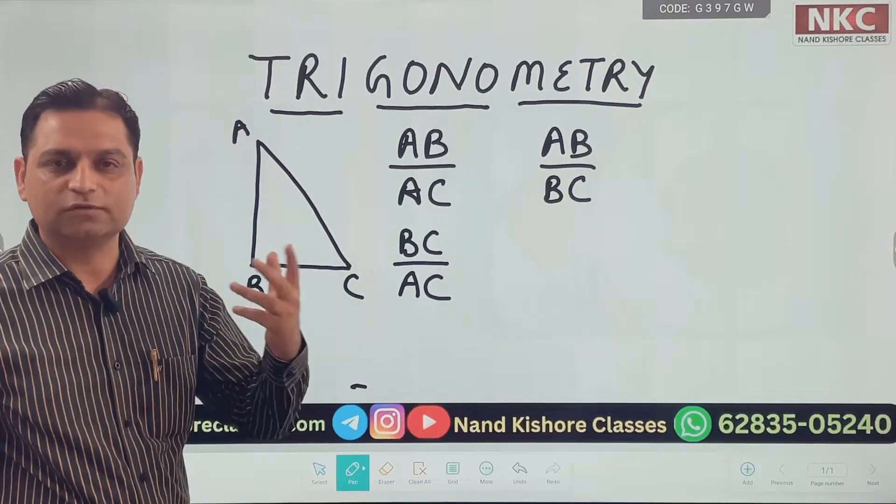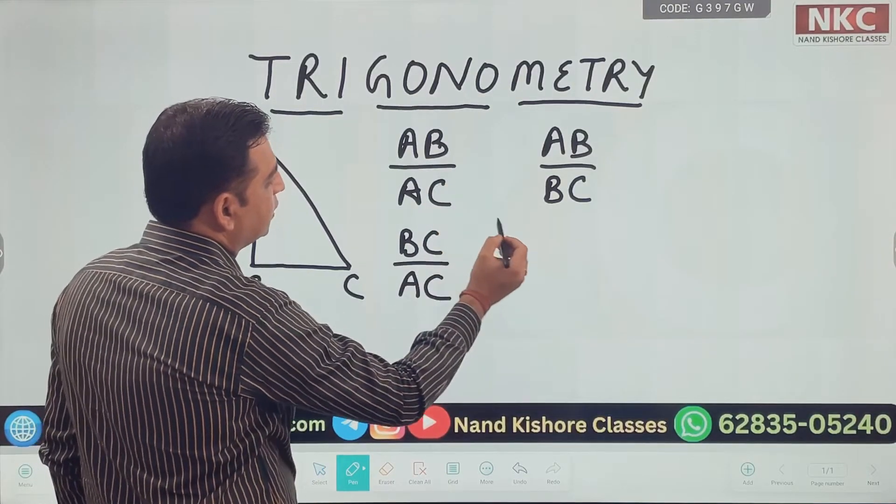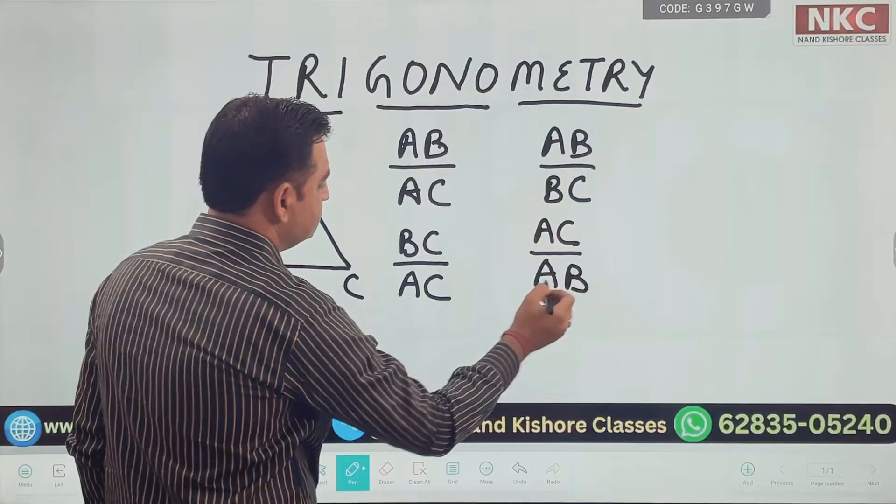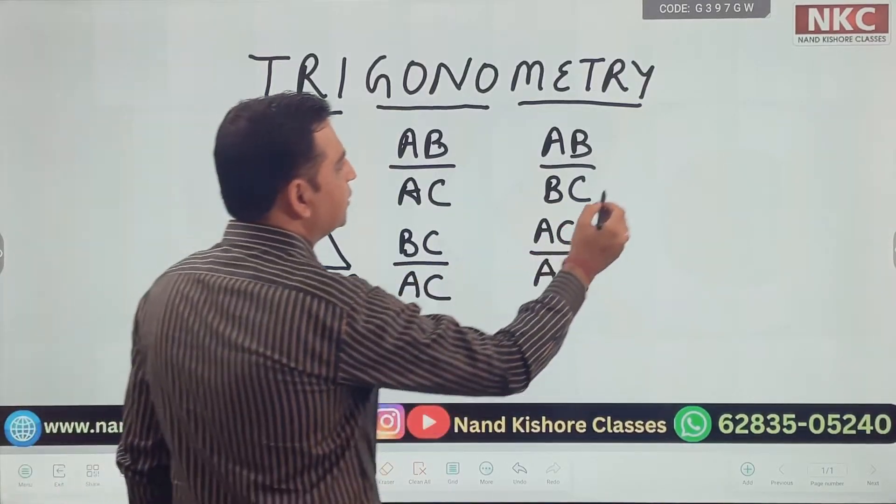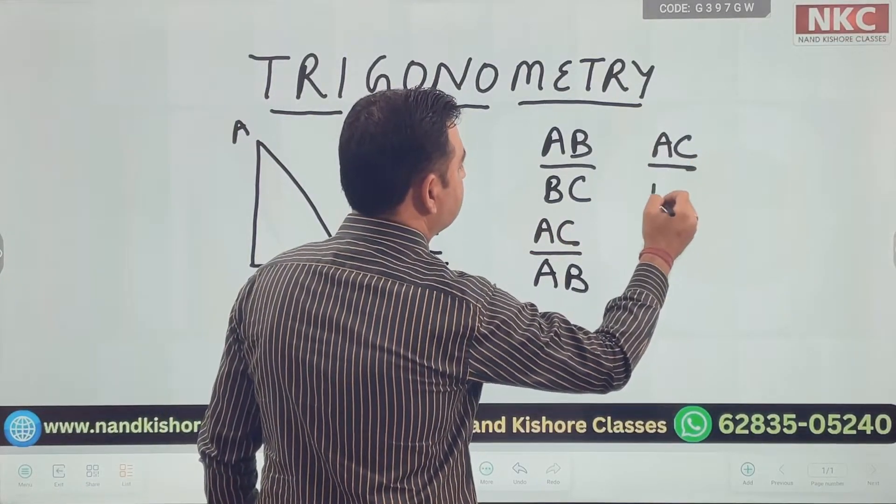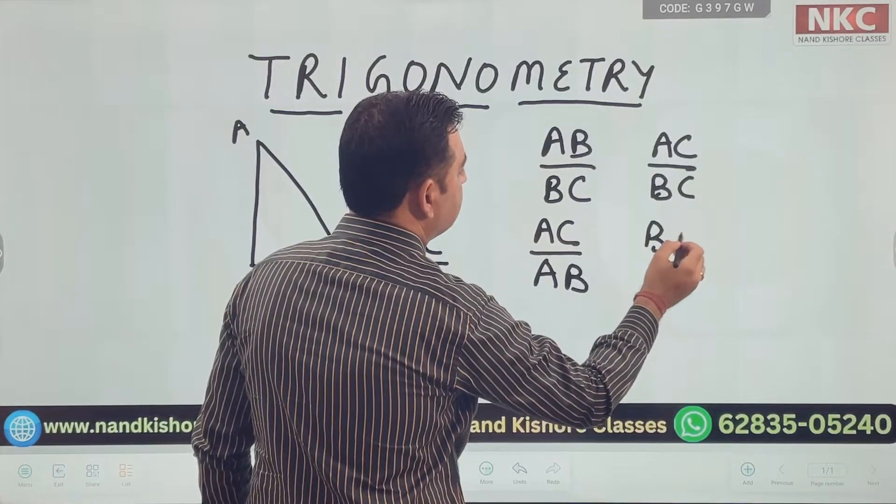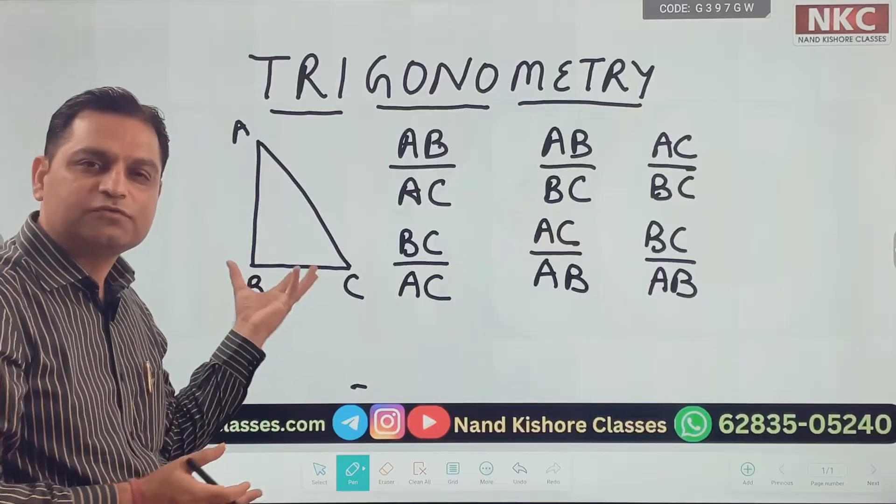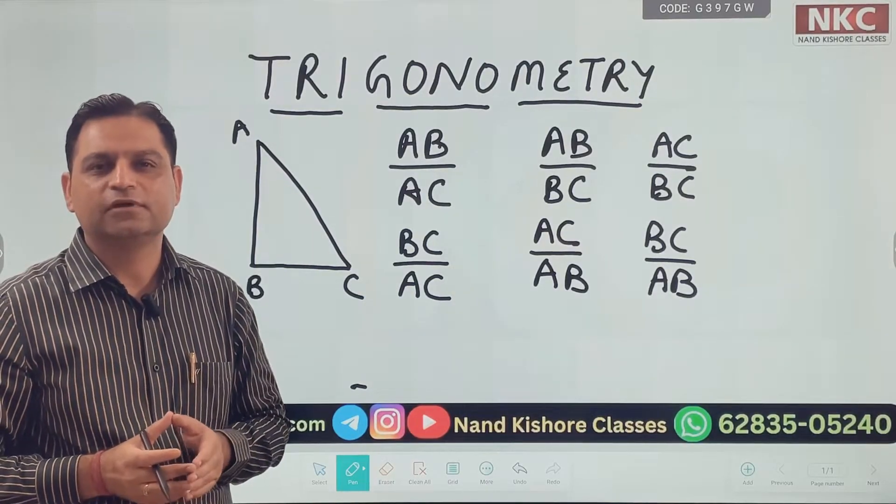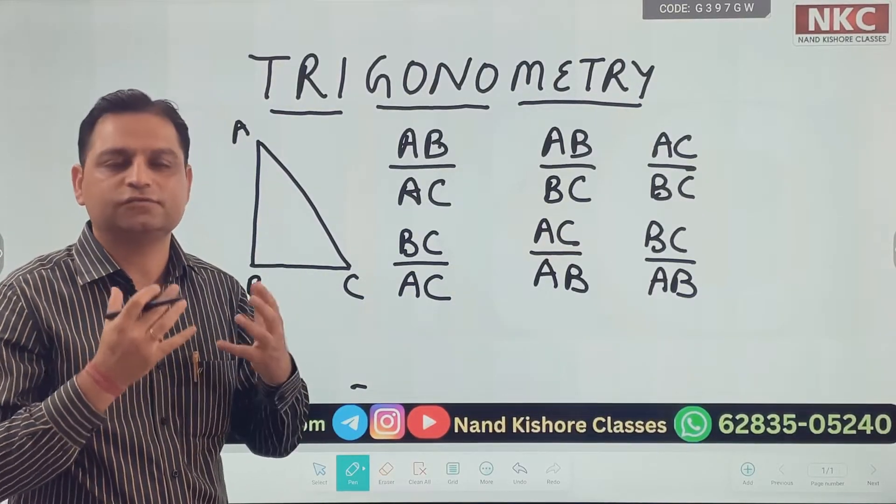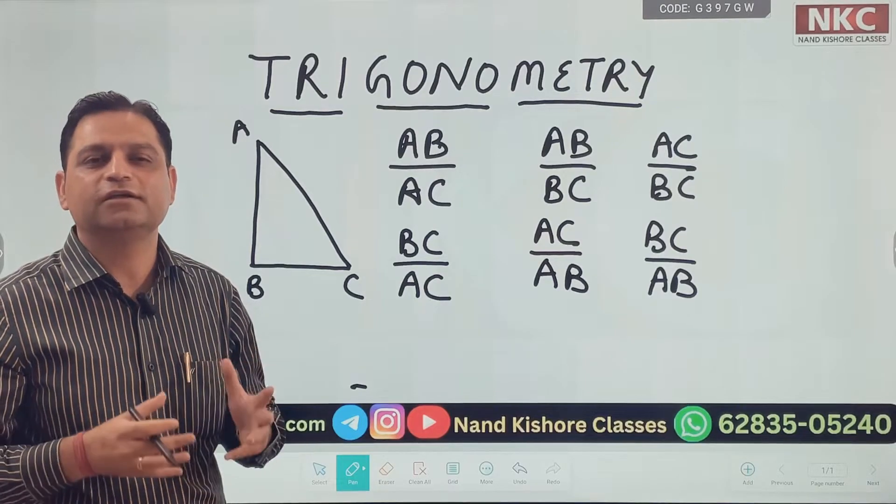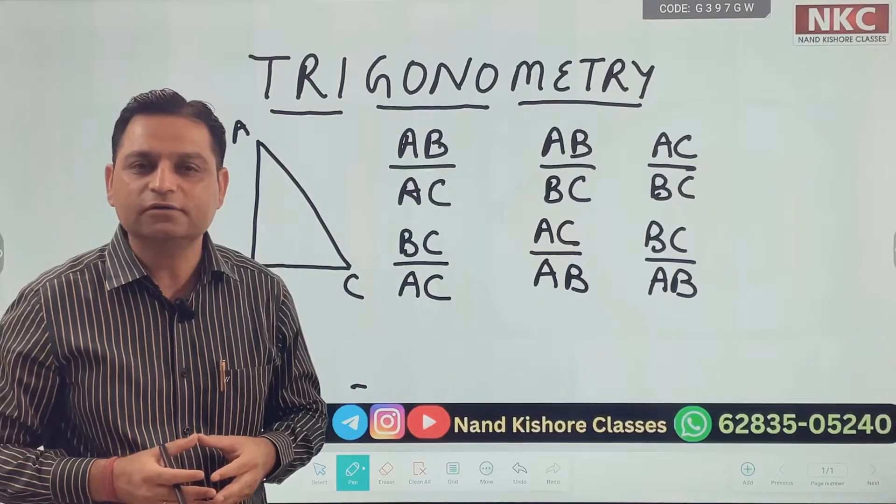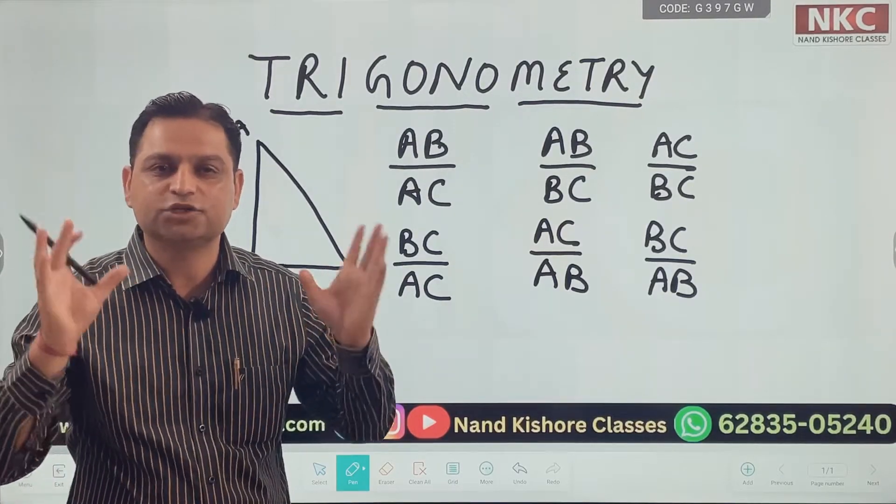For example, instead of AB upon AC, I can do AC over AB. Instead of BC upon AC, I can do AC upon BC and last I can do BC upon AB. So, these all are the ratios of the triangle. Ratios of the sides of the triangle. Since we are dealing in trigonometry, these are known as trigonometric ratios.